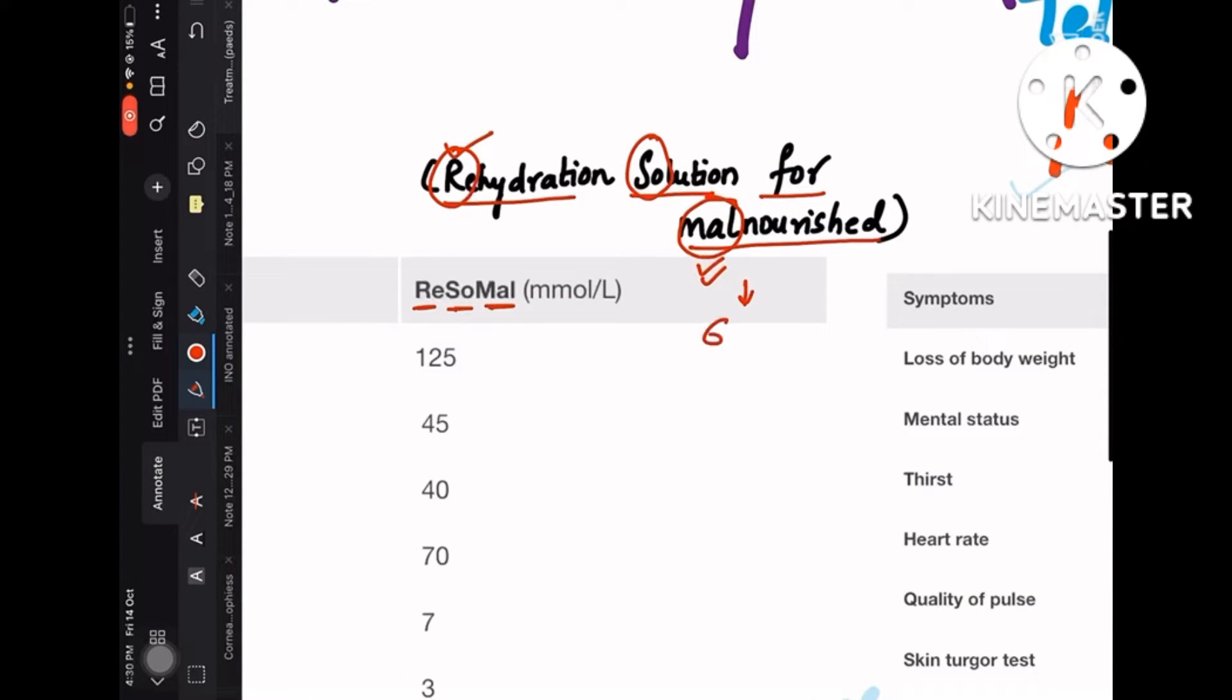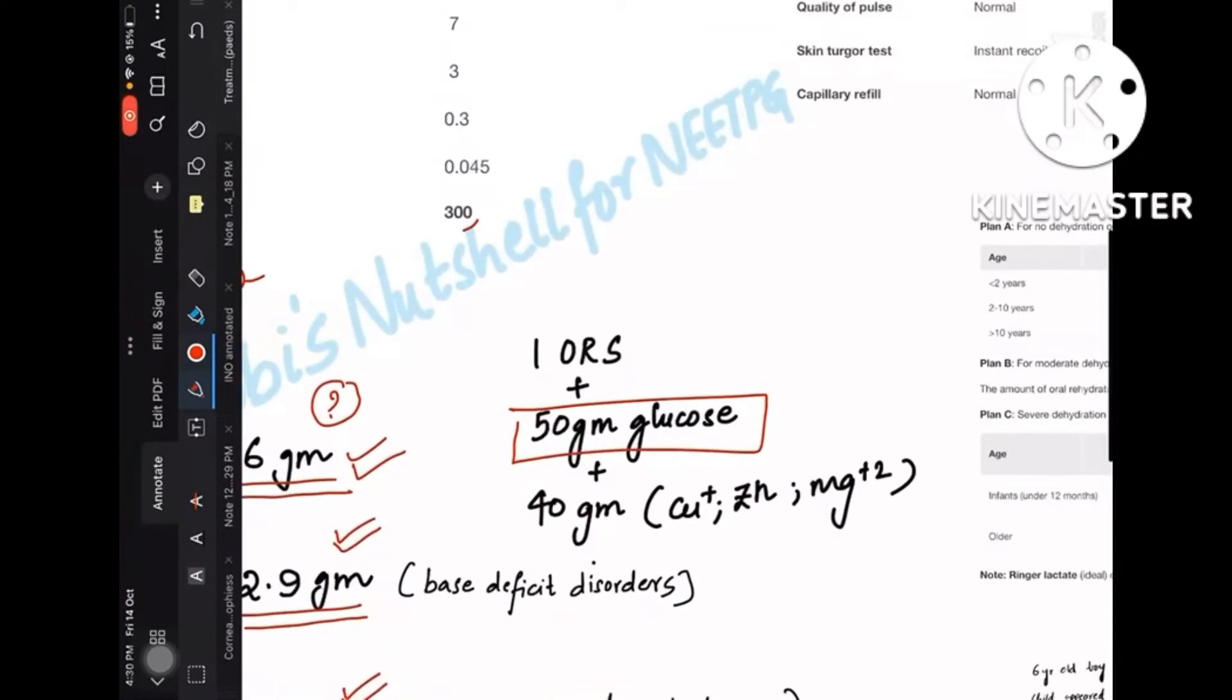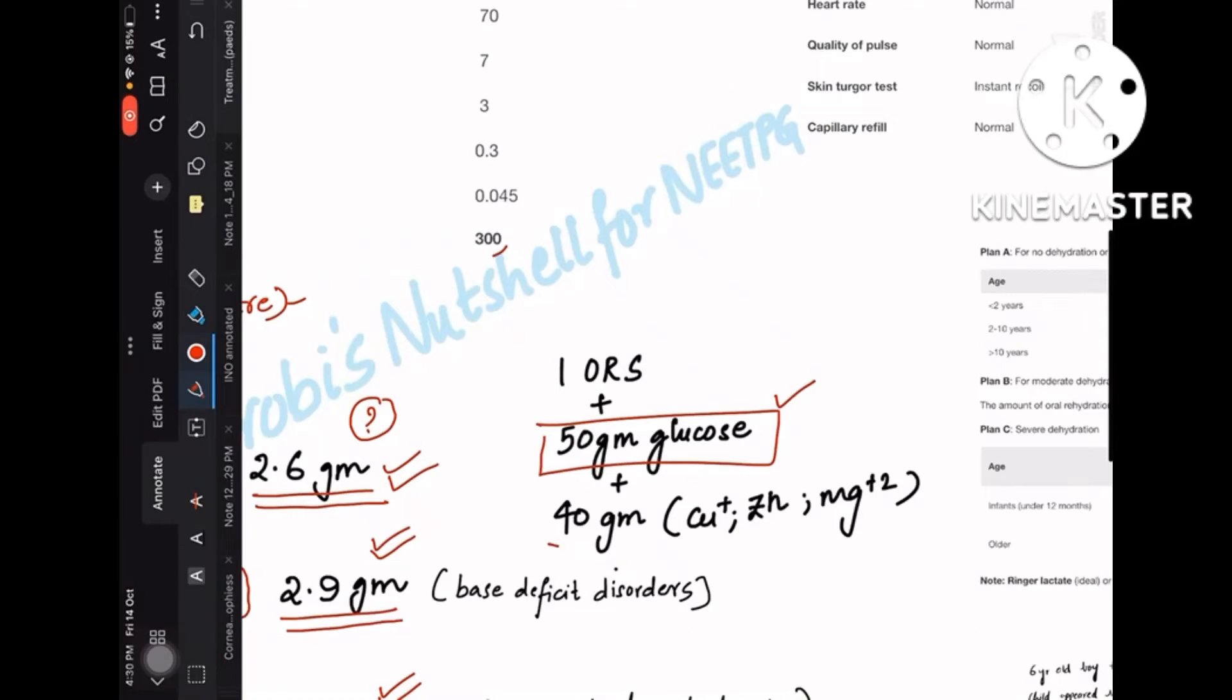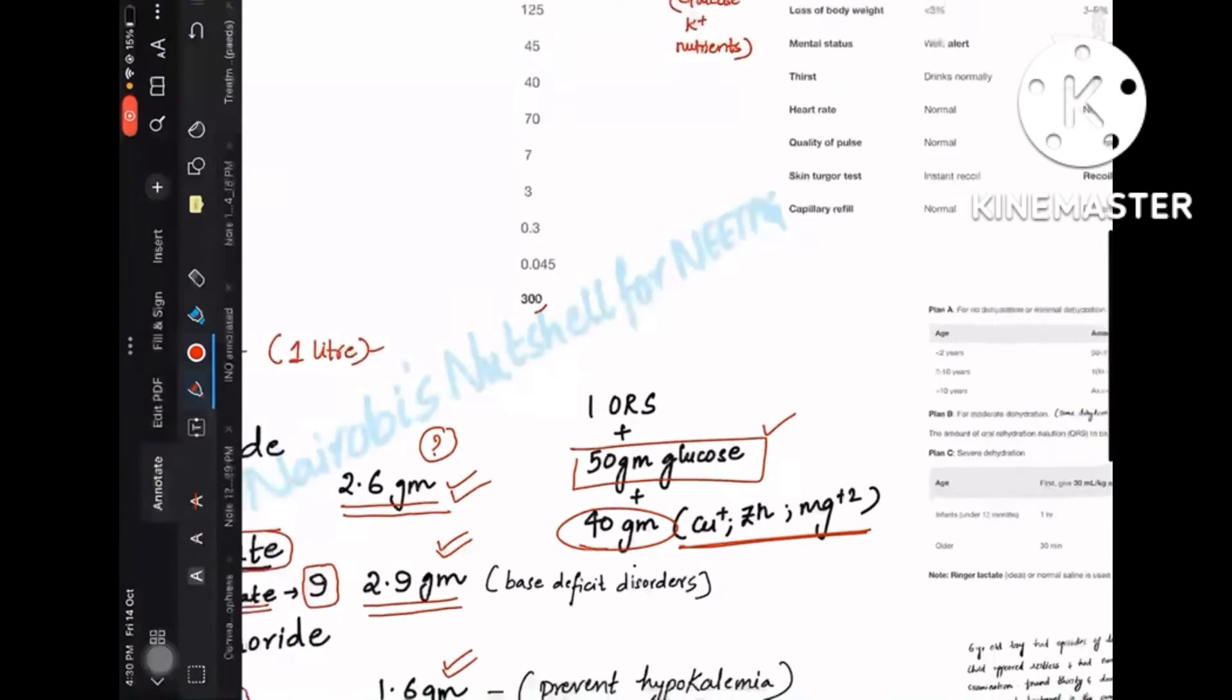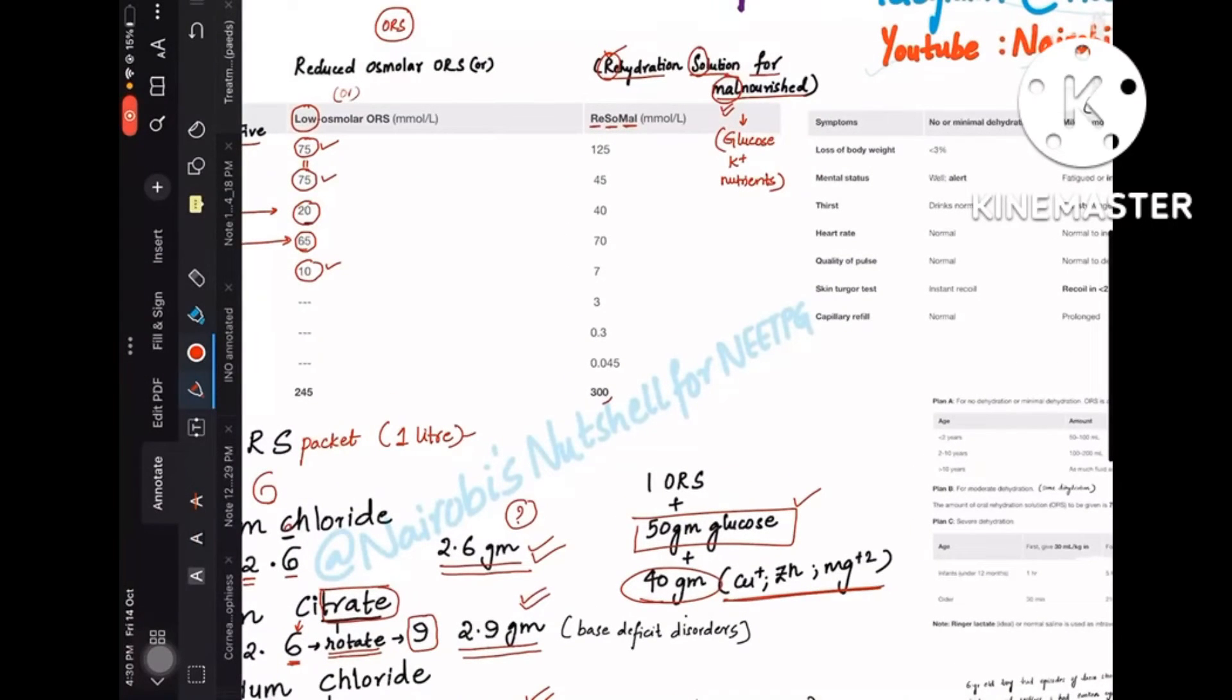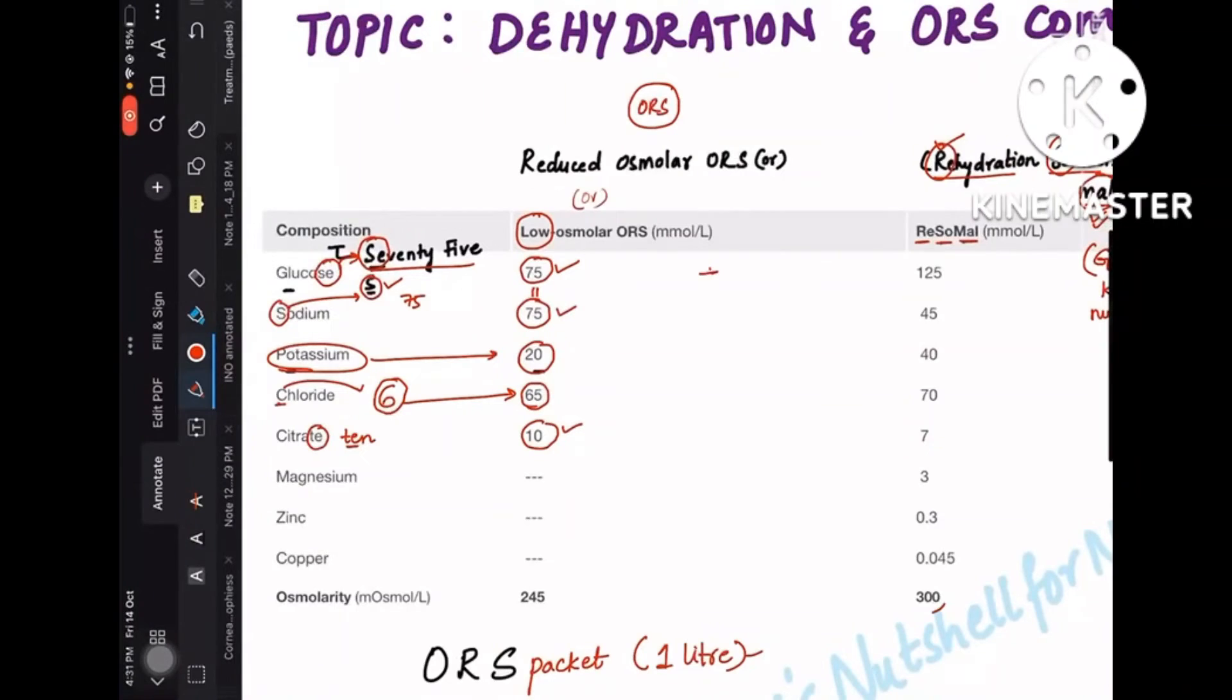Malnourished kids will be deficient of glucose, potassium, and some micronutrients too. So you have to give everything in this solution format. You add 50 grams of glucose and you add 40 grams of some nutrients and minerals to this packet. So look at here, you are adding 50 grams of glucose extra, so you have to add 50 here. So 75 plus 50 is 125. That is okay.